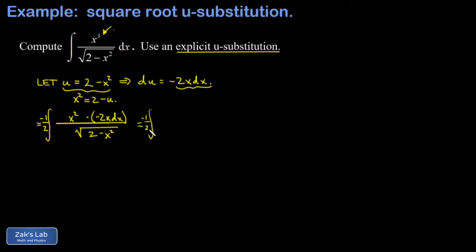So I have a negative 1 half integral of x squared, but that's just 2 minus u. And then negative 2x dx, that's du. And then in my denominator is the square root of u, which I'm going to write as u to the 1 half because I can see what's coming next.